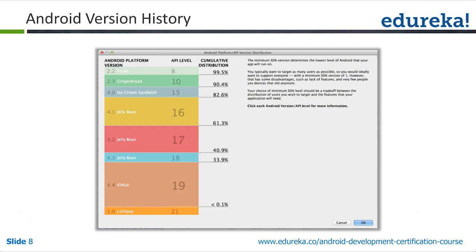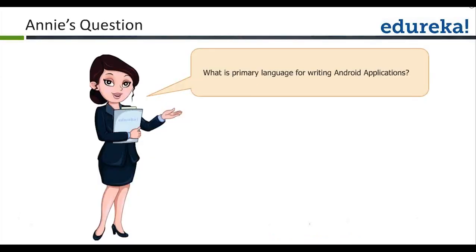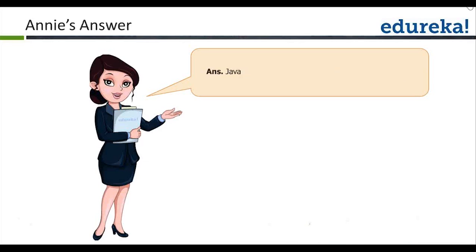This is the Android version history you will see while creating an application. I will shortly start Android Studio and show you this particular screen — whenever you start creating a new project you will get that screen. It is a question time: the primary language we use for creating Android applications is Java.